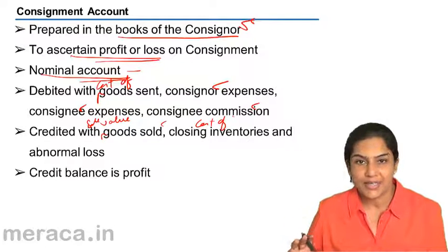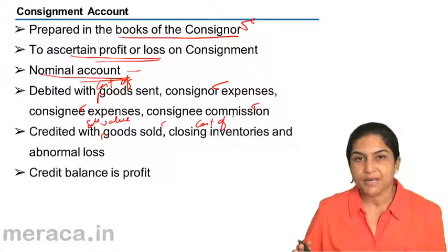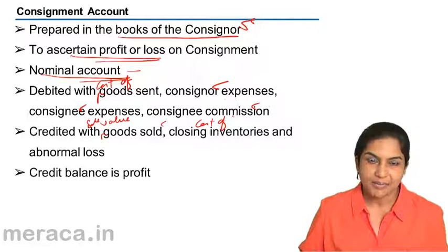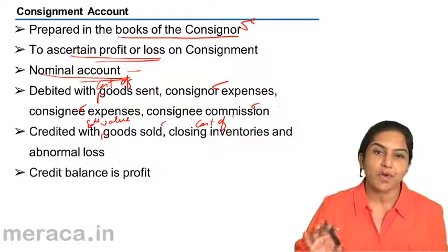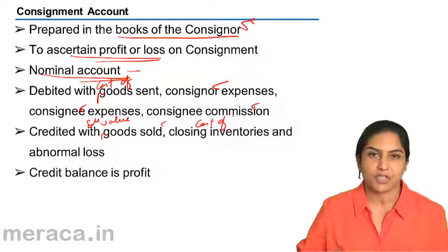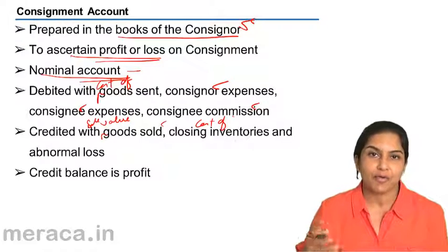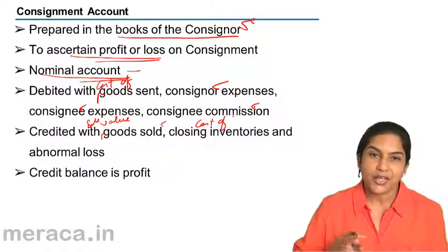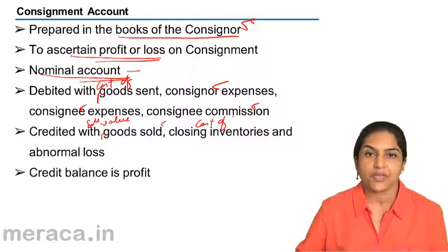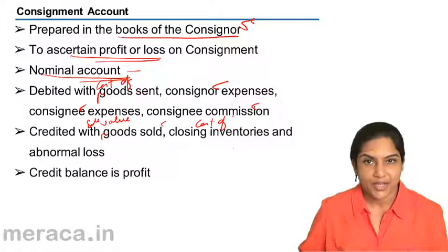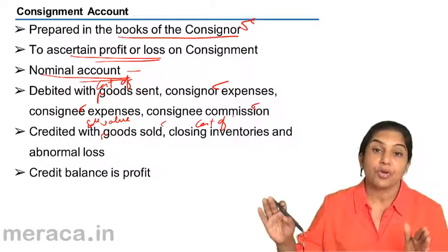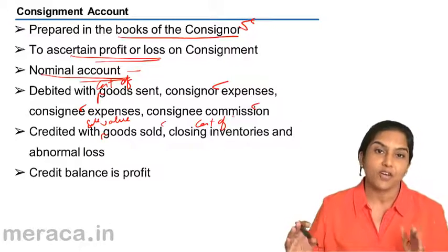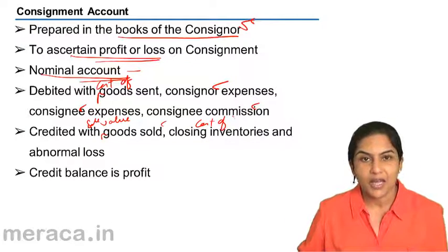Abnormal loss is credited to the consignment account because we want to know the actual profit on consignment. Any effect of abnormal situations — maybe a fire, flood, abnormal loss, or theft in transit — would be removed so that the actual profit on consignment can be gauged under normal circumstances.